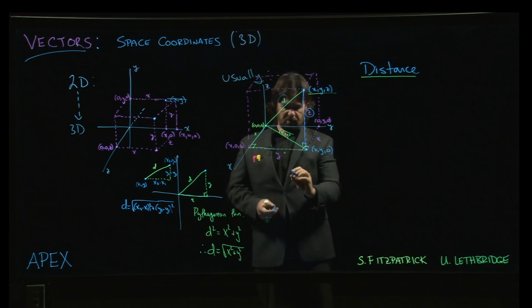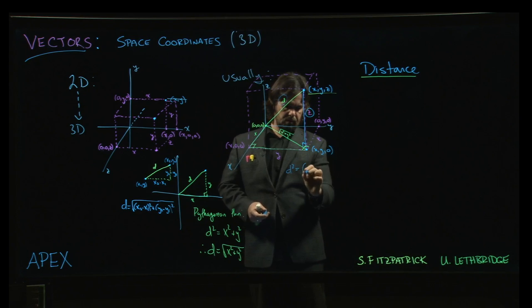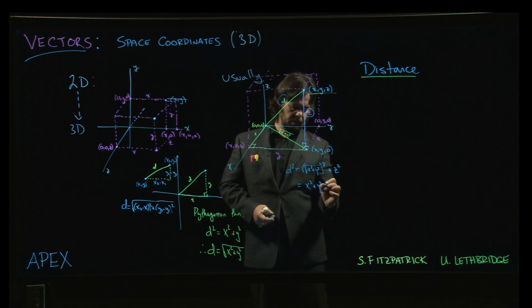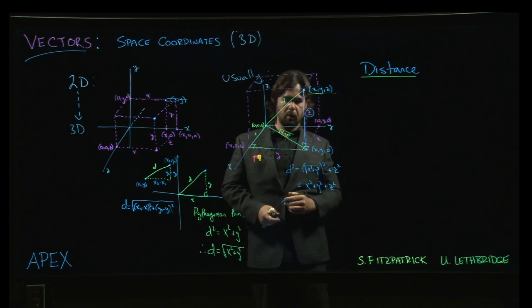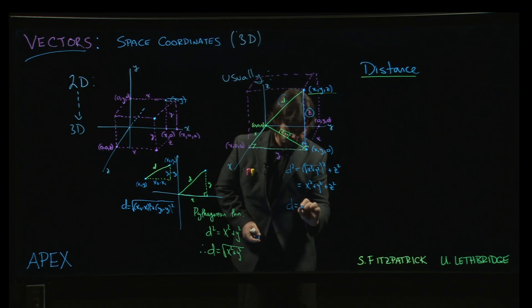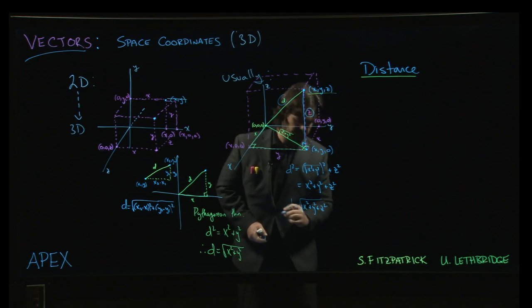So we have this right-angled triangle here. This d is actually the hypotenuse of that right-angled triangle. So what we get is that d squared is the square root of x squared plus y squared squared plus z squared. So x squared plus y squared plus z squared. So in the end, all you end up doing is you just add on the extra coordinate, the square root of x squared plus y squared plus z squared.